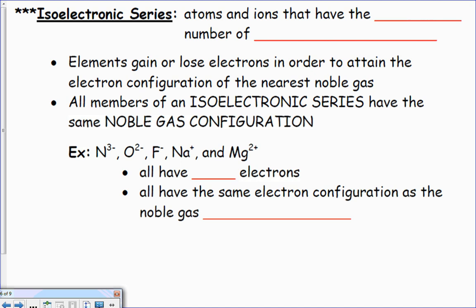Isoelectronic series: the atoms and ions that have the same number of total electrons. Elements gain or lose electrons in order to obtain electron configuration. So here we go—all have the same number of electrons. Nitrogen has a total of seven electrons; if I'm at minus three, I have ten total electrons.